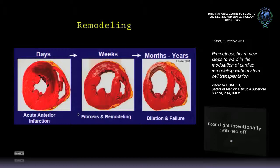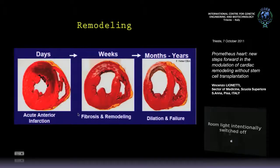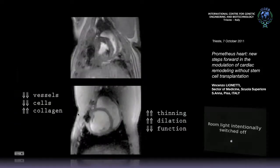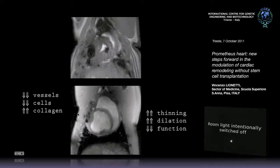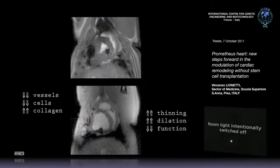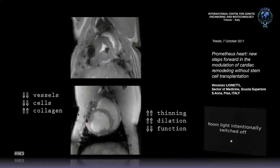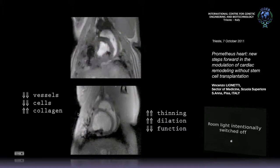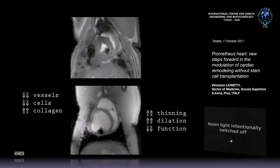When you have damage, the process called remodeling starts. You have a progressive loss of cardiac cells in the area of myocardial infarction. After that you have a replacement of lost cells with scar tissue, a thinning of the wall, and dilation of the chamber. The heart no longer has the same structure, and so no longer has the same function — there is a progressive impairment of global cardiac function, and the heart is not able to pump blood to the organs.